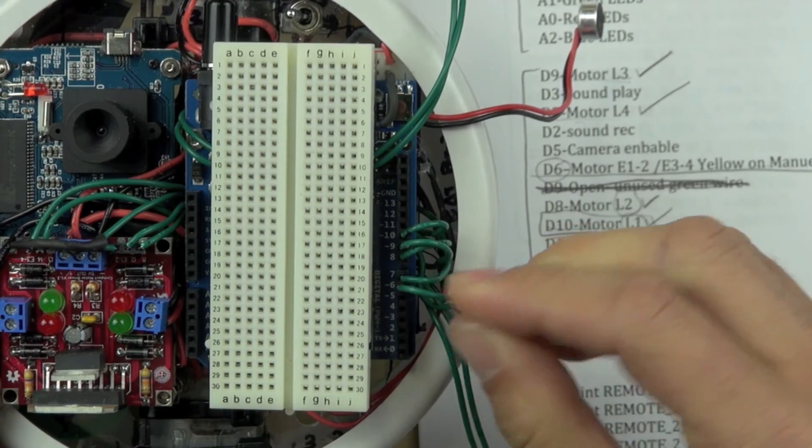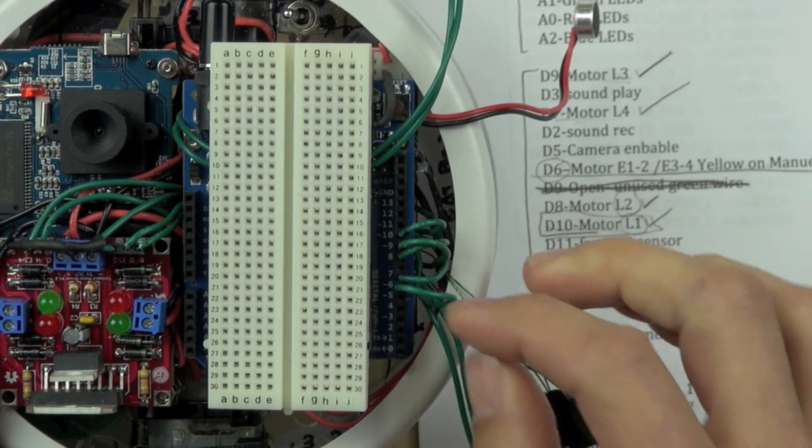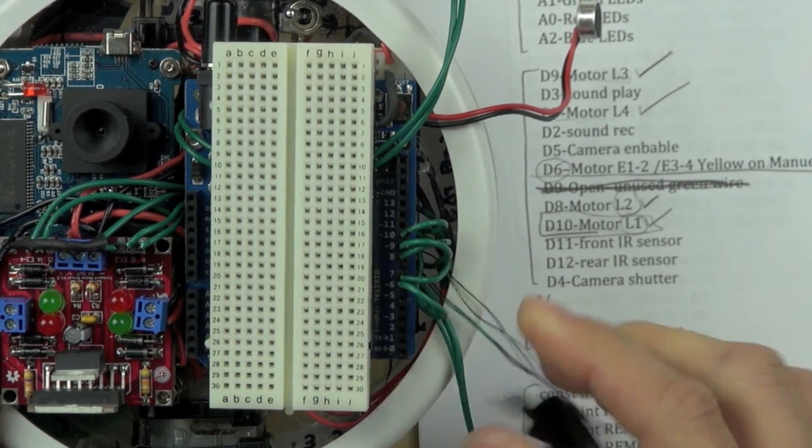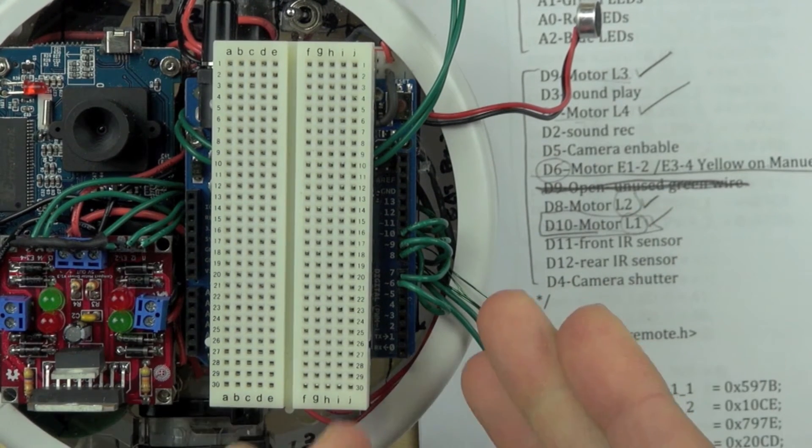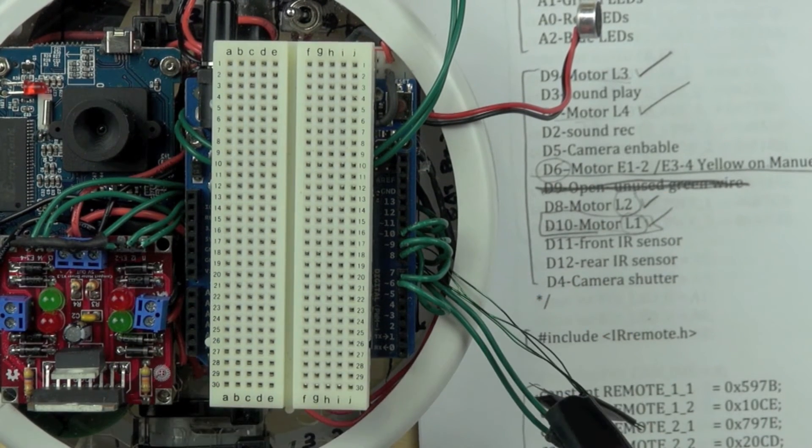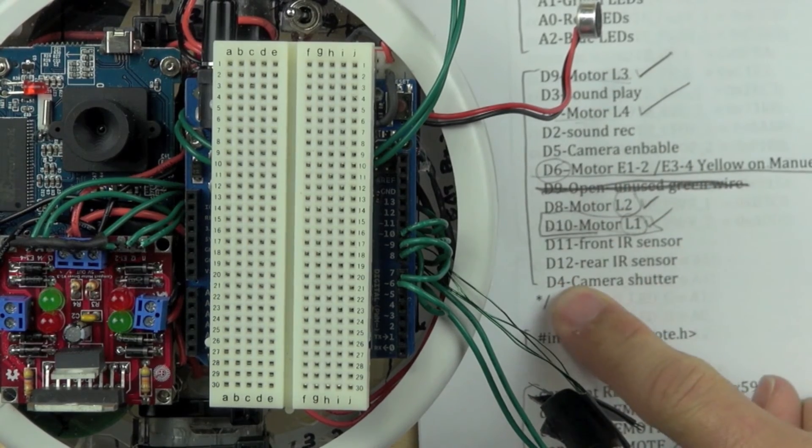We'll finish connecting the rest of the wires using the same method, just checking their continuity and then connecting them to the same pinout that is on our list. If you're going to use the same code as us, make sure that you follow the same pinouts. We'll post that online.